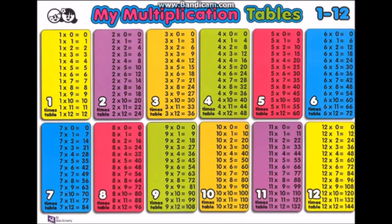9 x 0 is 0, 9 x 1 is 9, 9 x 2 is 18, 9 x 3 is 27, 9 x 4 is 36, 9 x 5 is 45, 9 x 6 is 54, 9 x 7 is 63, 9 x 8 is 72, 9 x 9 is 81, 9 x 10 is 90, 9 x 11 is 99, 9 x 12 is 108.